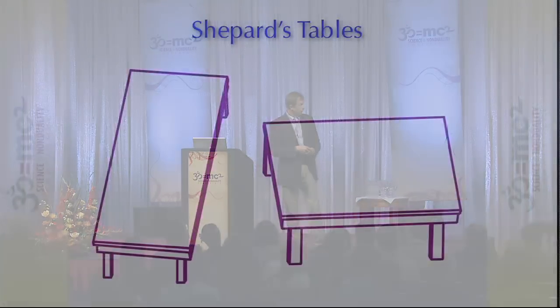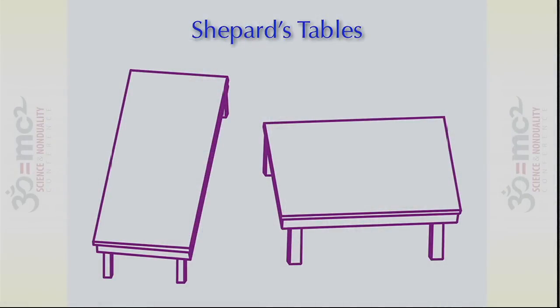Just a couple of concrete examples. This table and that table have exactly the same shape of the tabletop. One might look long and thin, the other short and fat, but they're exactly the same shape. Your visual system has rules for creating 3D shapes, and we understand those rules — they force you to see things, in this case, incorrectly. I know you probably don't believe me, but you're welcome to come up afterwards and measure them on my screen. They're exactly the same shapes.